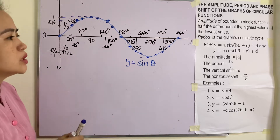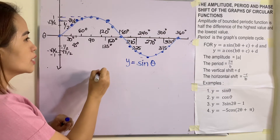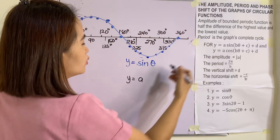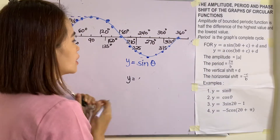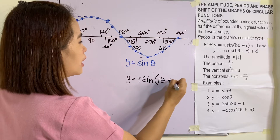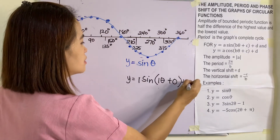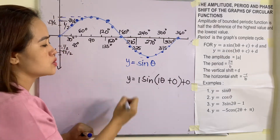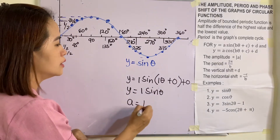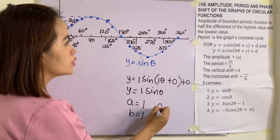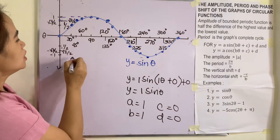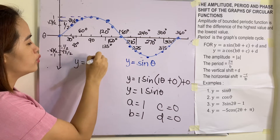Now let us identify the amplitude. Writing y = A·sin(Bθ + C) + D: our A = 1, B = 1, C = 0, D = 0. The amplitude equals the absolute value of A = 1. We can also verify: maximum is +1, minimum is -1, so amplitude = (1 - (-1)) / 2 = 2/2 = 1. The amplitude is always positive because it's an absolute value.